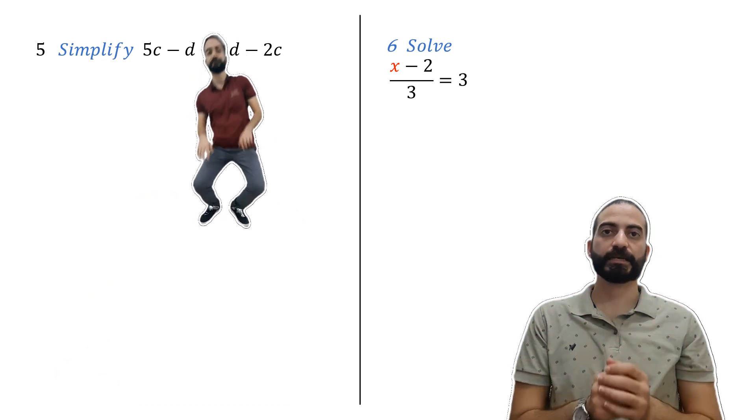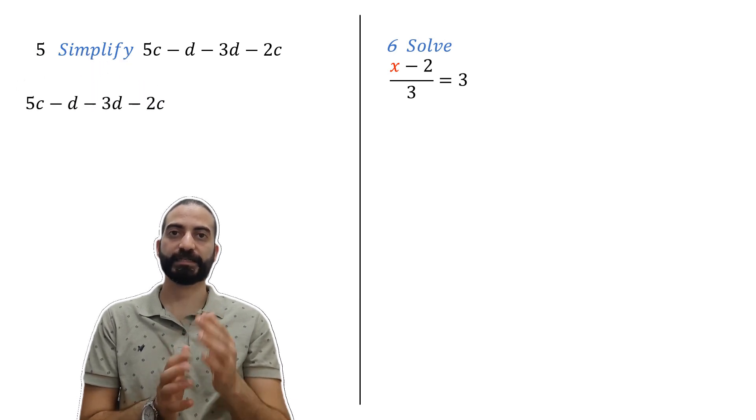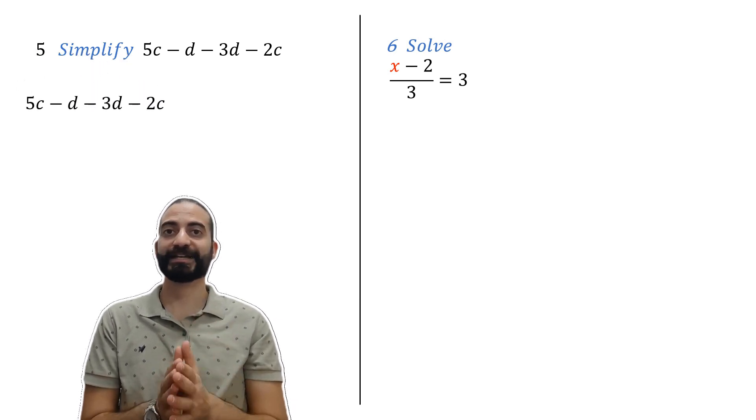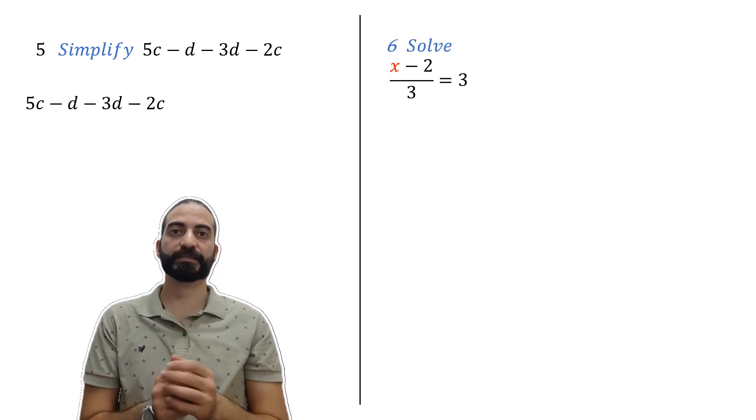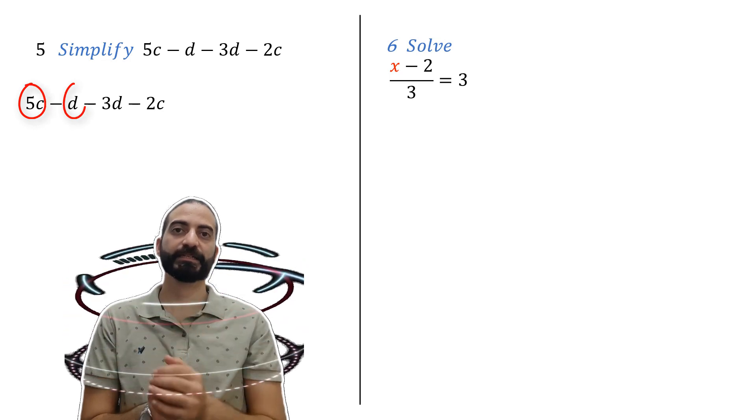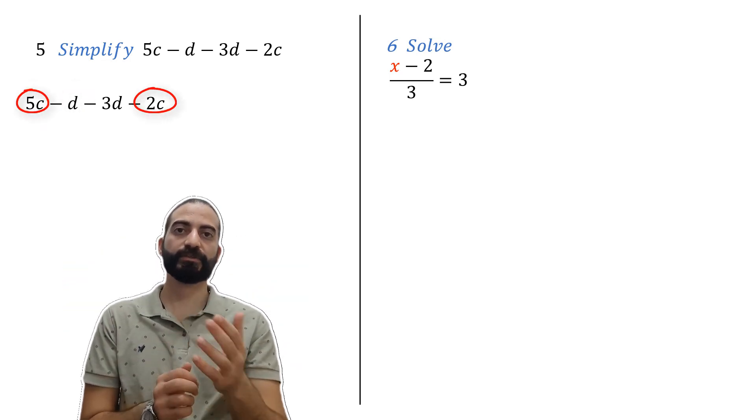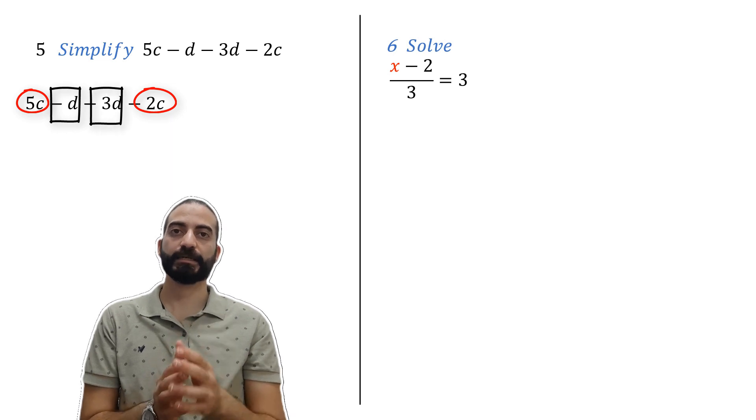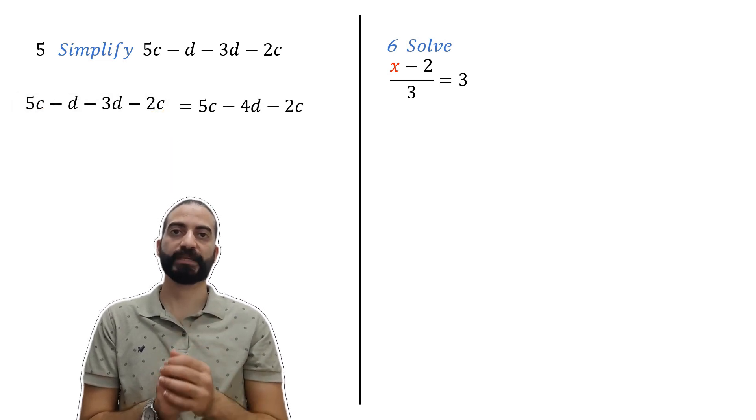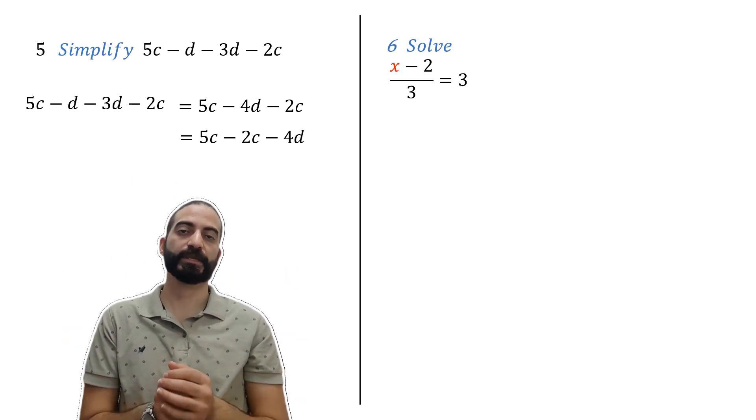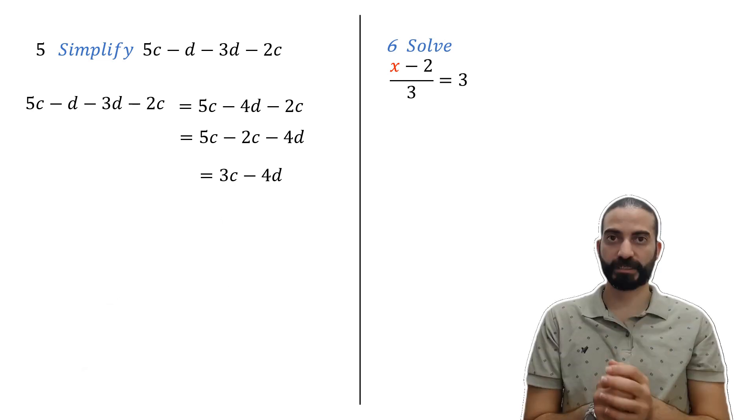What is asked of us in the 5th question is simplify 5c minus d minus 3d minus 2c. Here we cannot combine c with d, but we must combine c with c and d with d. Minus d minus 3d equals minus 4d, and 5c minus 2c equals 3c, and we get this answer. We now move to the 6th question.